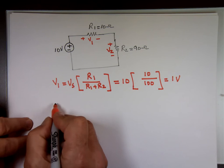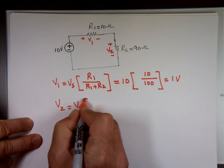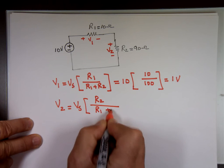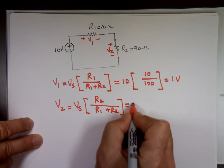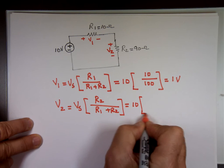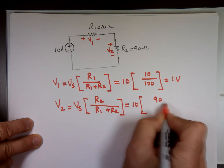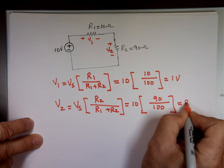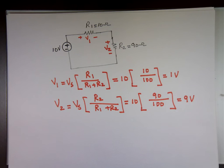V2 is equal to Vs times R2 over R1 plus R2. 10 times R2, which is 90 over 100. And what do we have? 9 volts. If I add 1 and 9, it should give me 10.